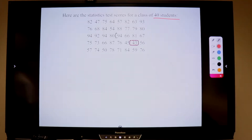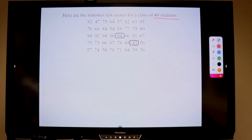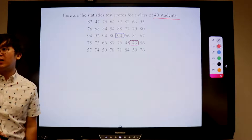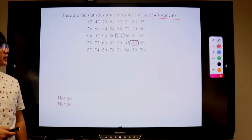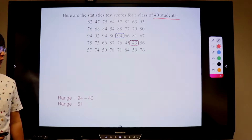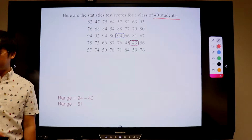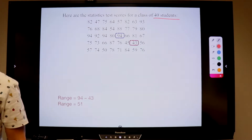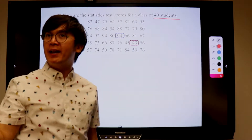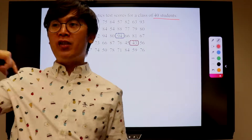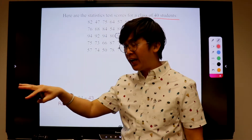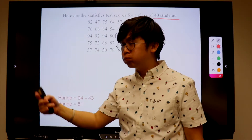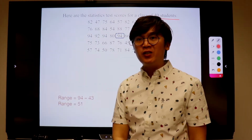The highest is 94. Now if we compute for the range of the scores, what is 94 minus 43? That gives us 51. Now if we're going to use the same technique that we did on the first case, on the age of boys problem, we have a range of 51.